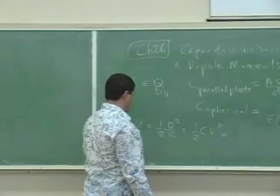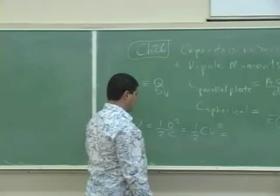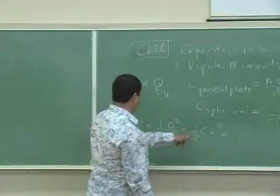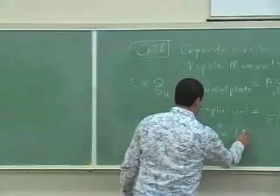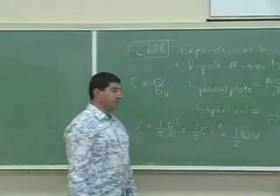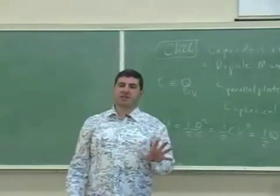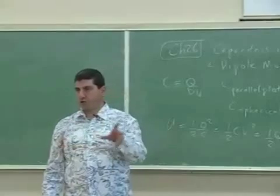The other form is, if I get rid of the C, then it'll be one half QV. Depending on the situation, we use different forms.